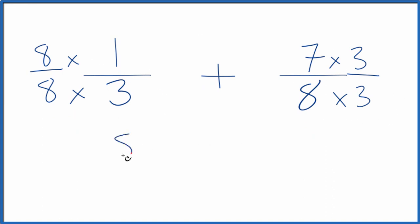But now eight times one is eight. Eight times three is 24. Over here, seven times three, that's 21. Eight times three is 24. Since we have the same denominators, we're just going to add the numerators together. Eight plus 21 is 29.